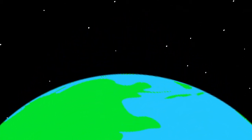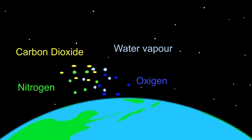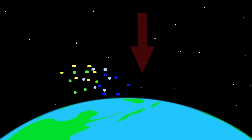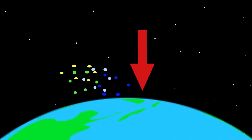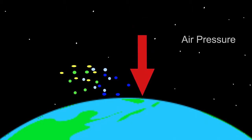In the atmosphere there are all kinds of gases. Oxygen, nitrogen, carbon dioxide and water vapor are the most well known. Despite the fact that these gases are all very light, they do have a weight. The weight of all those gases at a certain area is called air pressure. Air pressure is the weight of all the gases above it.